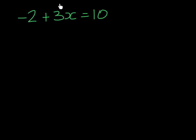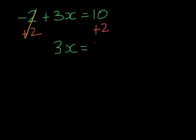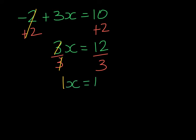One more thing: the 3 is really stuck to x, so it's going to be the second inverse operation we're going to do. First we will add 2 to both sides. On the left-hand side we'll be left with 3x, and on the right-hand side 10 and 2 is 12. We will then divide by 3 on both sides. On the left-hand side, 3 divided by 3 will give me 1 with x, and 12 divided by 3 is 4.